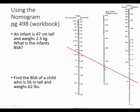Where the line crosses the center column is the body surface area, and I just need to figure out the number for this location. Looking at the scale, the bottom of the scale is 0.1 meters squared. This line would be 0.15 meters squared, so 0.16, 0.17. The body surface area for this infant is 0.17 meters squared.